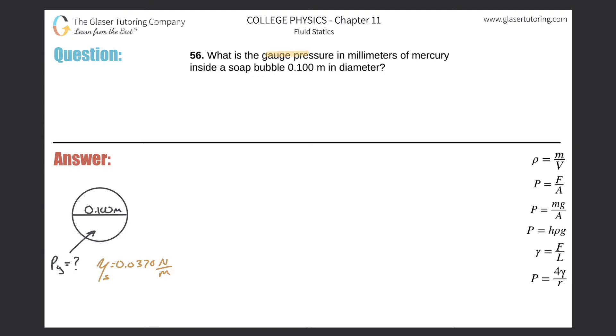Number 56, what is the gauge pressure in millimeters of mercury inside a soap bubble 0.1 meters in diameter?